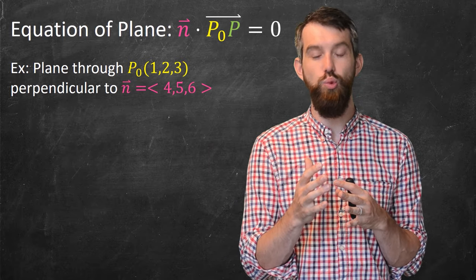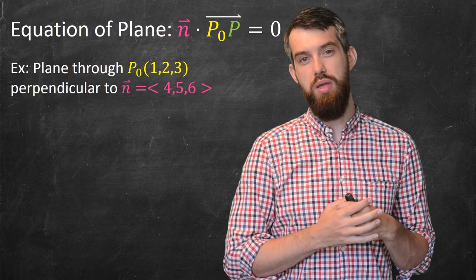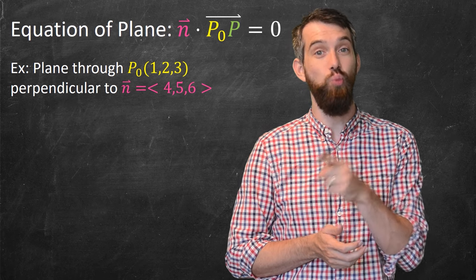Now, the one hard part to think about is what is the P₀ to P vector? P₀ is that point 1, 2, 3, but P itself is going to be a point x, y, z.